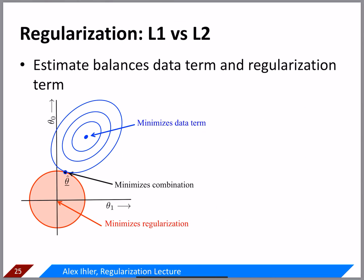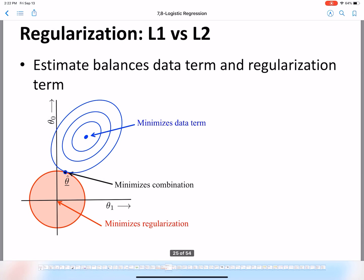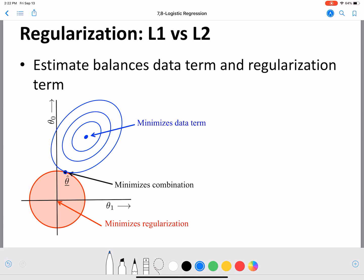Now let's understand how these two regularizations differ. We'll plot them on axes with two features, theta_0 and theta_1, showing both the loss term and the regularization term. The L2 regularization term is theta_0² + theta_1², and we want to bound it by some value a — meaning the penalty must be less than or equal to a.